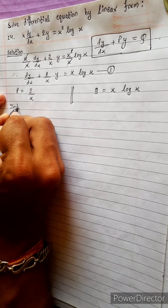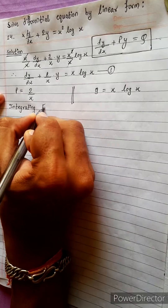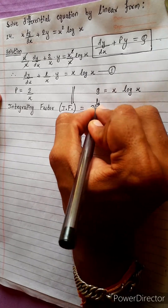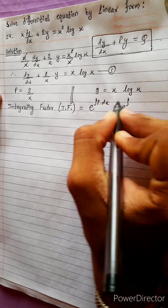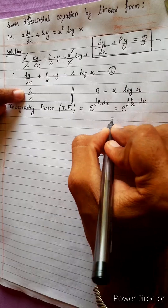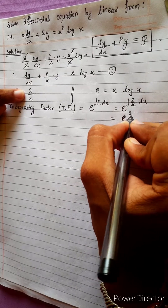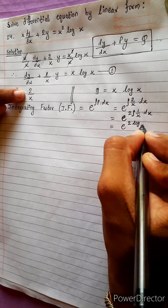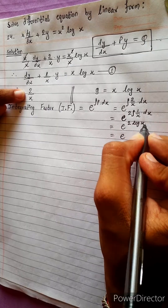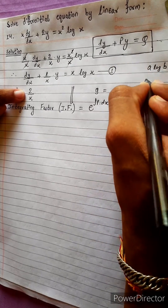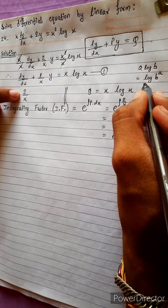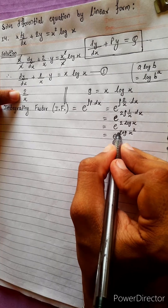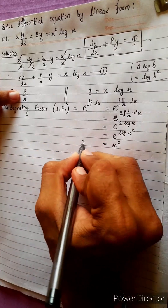Now we use P to find the integrating factor. The integrating factor (IF) equals e^(∫p dx). Substituting P = 2/x, we get e^(∫2/x dx). Since ∫(1/x)dx = log x, this becomes e^(2 log x). Using the formula a log b = log b^a, we get e^(log x²). Since exponential and log are inverses, this cancels to give x². So the integrating factor is x².